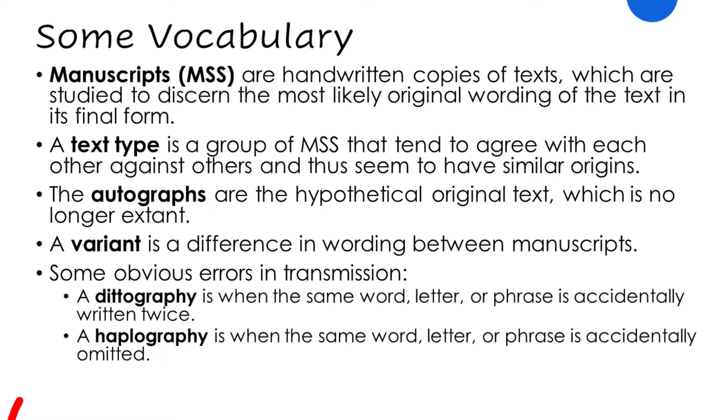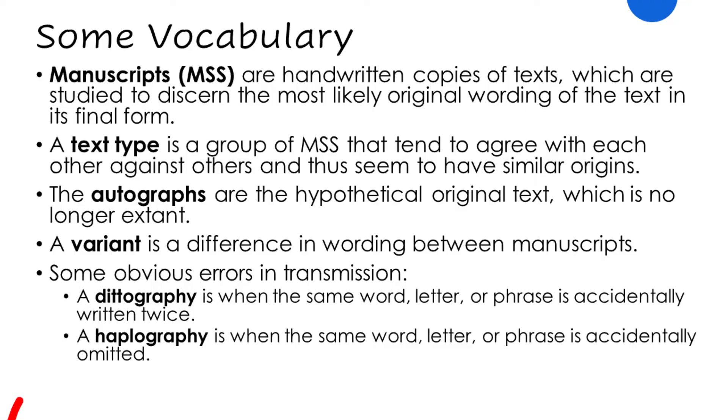All of this is a quest for the wording of the autographs — the hypothetical original texts. The key thing to understand is we don't have any of the autographs; we don't have the original final form of the Gospel of Mark, Luke, Matthew, or Paul's second letter to the Corinthians. We just have handwritten copies from centuries later. A variant is a difference in wording between manuscripts, and our task is to determine which variant is most likely the accurate one.